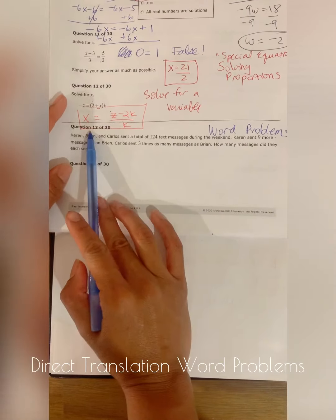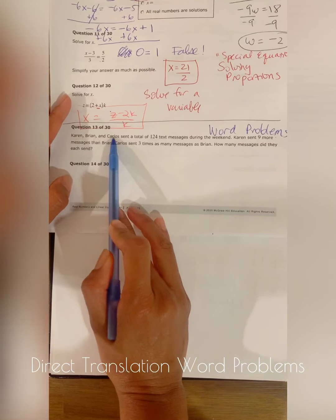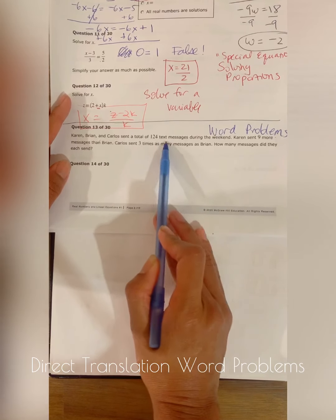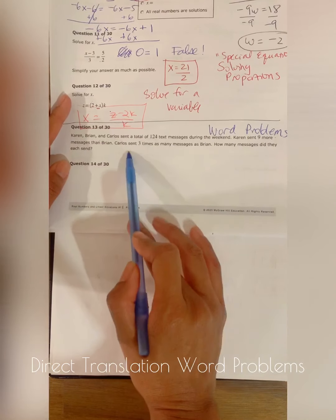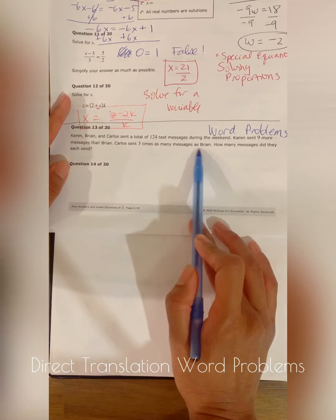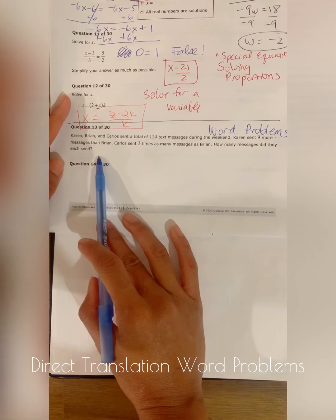So let's take a look at question 13. Karen, Brian, and Carlos sent a total of 124 text messages during the weekend. Karen sent nine more than Brian. Carlos sent three times as many as Brian. How many messages did they each send?